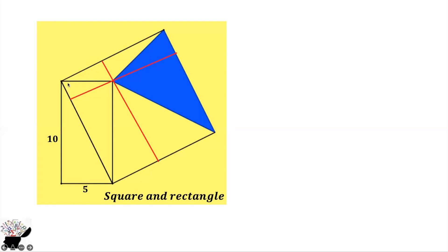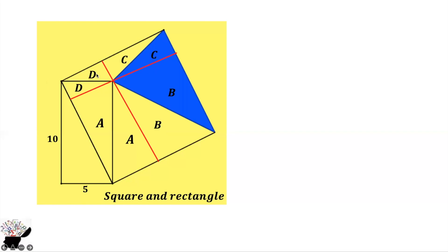Since each line is a diagonal, the area of one side equals the area of the other side. So if the area of one side is A, the other side is also A. Similarly, if the area of a side is B, the other is also B; if C, the other is C; and if D, the other is also D.